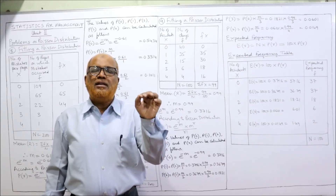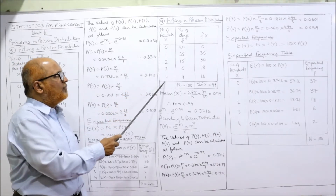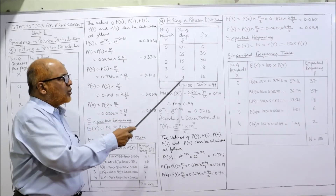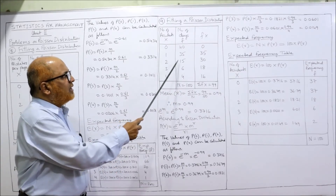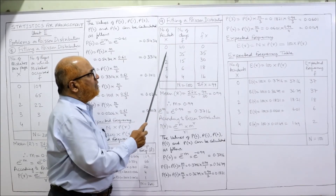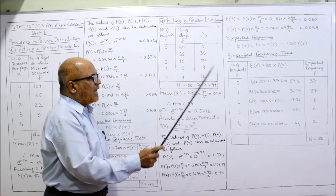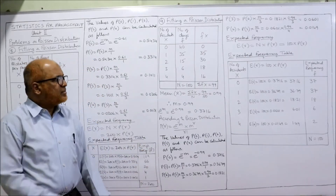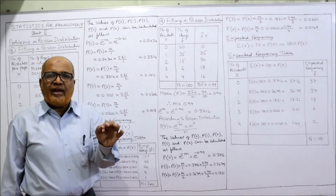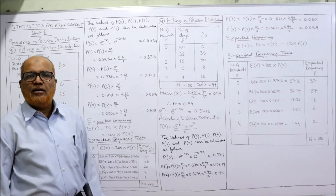First, set up the table for fitting the Poisson distribution. Number of accidents X: 0, 1, 2, 3, 4. Number of days F: 40, 35, 15, 6, 4 — total 100. The FX column gives: 0, 35, 30, 18, 16 — total 99. The mean X-bar equals summation FX divided by N, which is 99 divided by 100, giving 0.99. So on average, 0.99 accidents per day, and M equals 0.99.